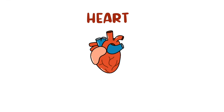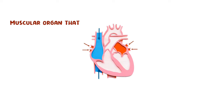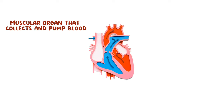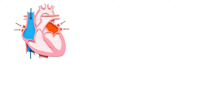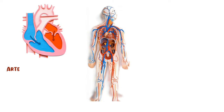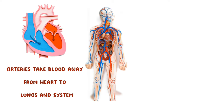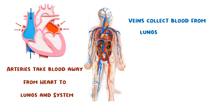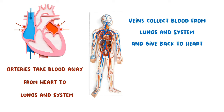The heart is made up of three layers: the outer layer of fibrous pericardium, the middle layer of muscular myocardium, and the inner layer of endocardium. The heart's function is to collect blood and pump it into the lungs and the system, where cells, tissues, and organs utilize oxygen and nutrition. Veins then collect the blood from the system and lungs and return it to the heart.